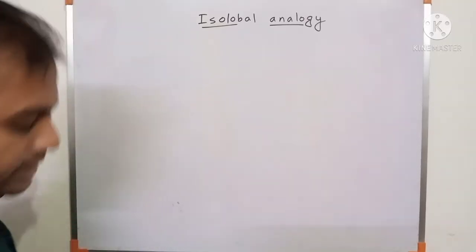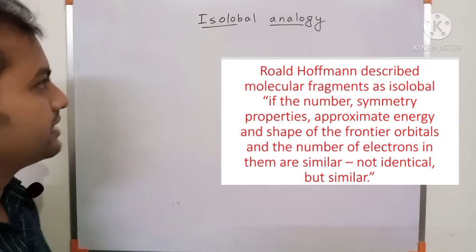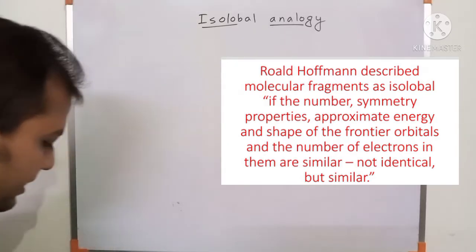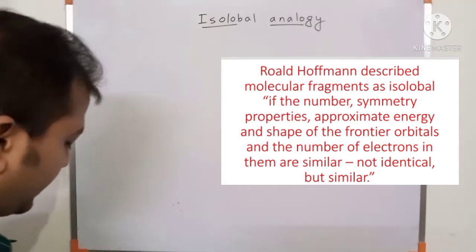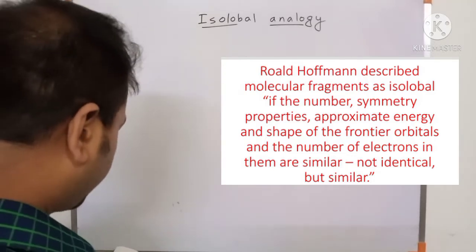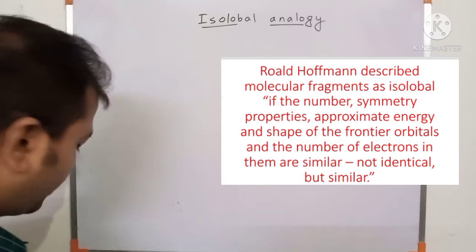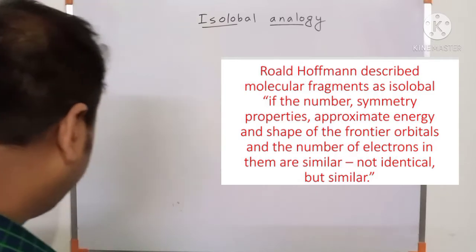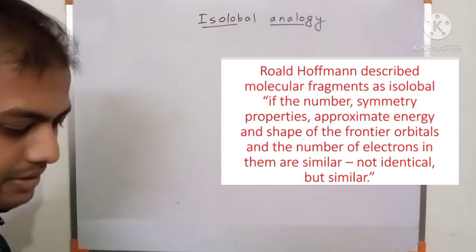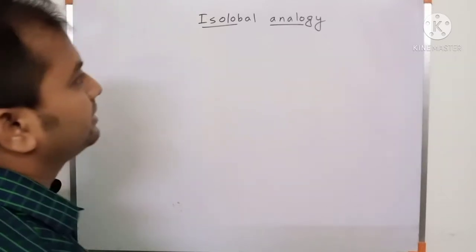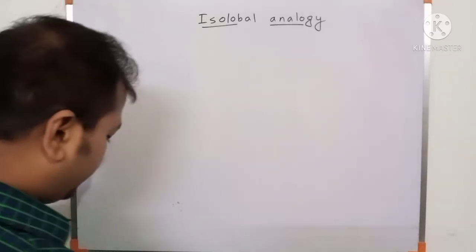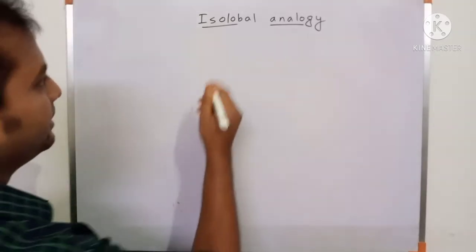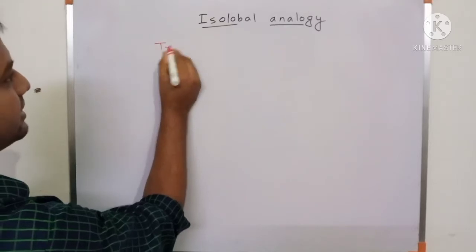First, the definition of isolobal analogy. According to Hoffmann's isolobal analogy, if the number and symmetry properties, approximate energy, and shape of their frontier molecular orbitals, and the number of electrons in them are similar — not identical, but similar — then the fragments are isolobal. But this definition is not the most important part; I will give you some tricks to solve any problem.